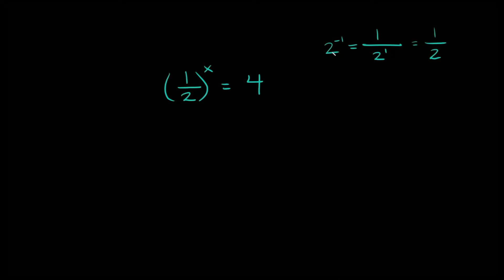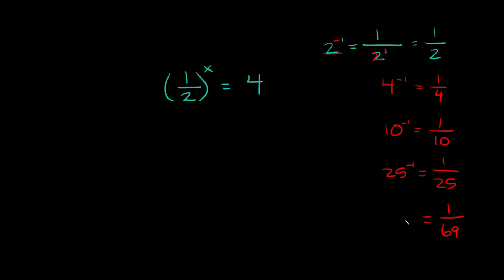So 1 over 4 equals 4 raised to the negative first power. 1 over 10 equals 10 raised to the negative first power. 1 over 25 equals 25 raised to the negative first power. 1 over 69 equals 69 raised to the negative first power. Whenever you have a fraction, just take whatever's in the denominator and rewrite it as that number raised to negative 1.